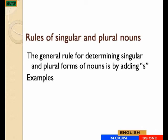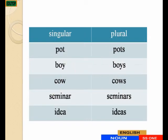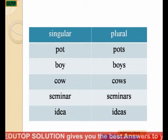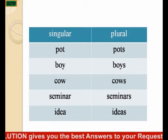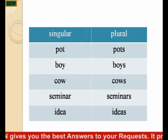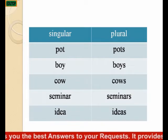There are rules of singular and plural nouns. The plural forms of nouns is by adding S. We have some examples here: pot becomes pots, boy becomes boys, cow becomes cows, seminar becomes seminars, idea becomes ideas.